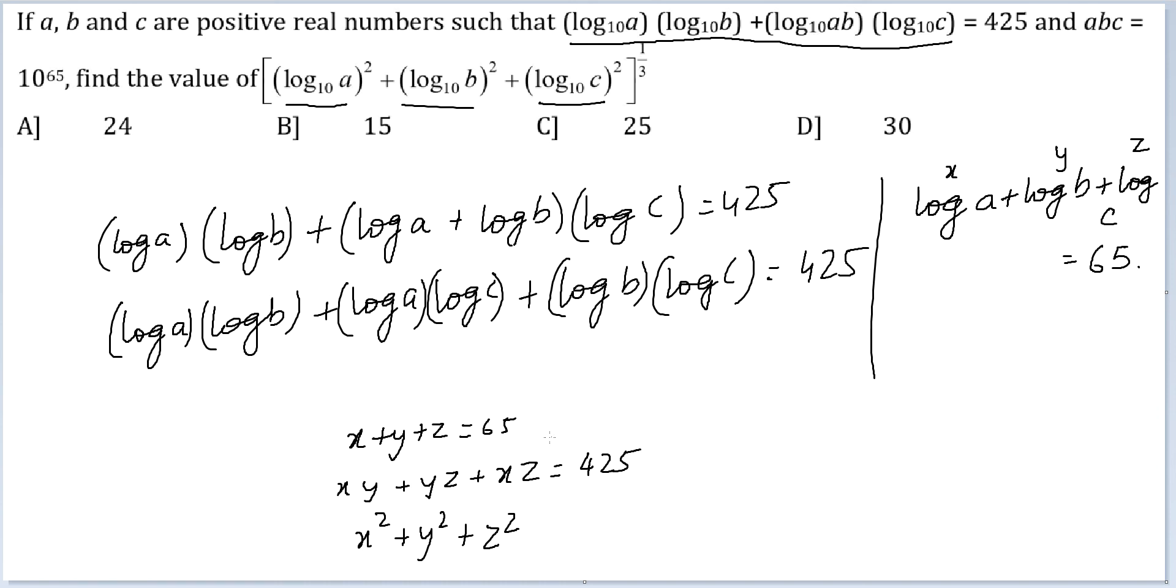Clearly, you know what to do. You have to take square on both sides which would lead you to x² + y² + z² + 2 times (xy + yz + xz). So, I am writing 2 times 425 directly is equal to 65 square. From here, I will get x² + y² + z². 4225 minus 850 will lead you to 3375.